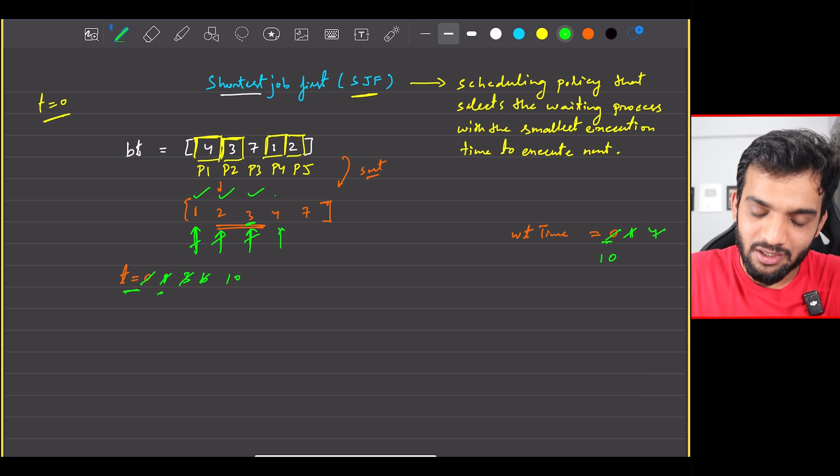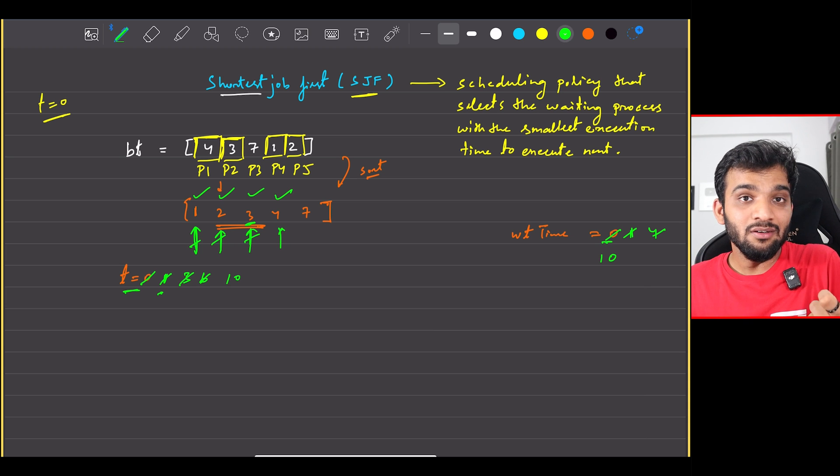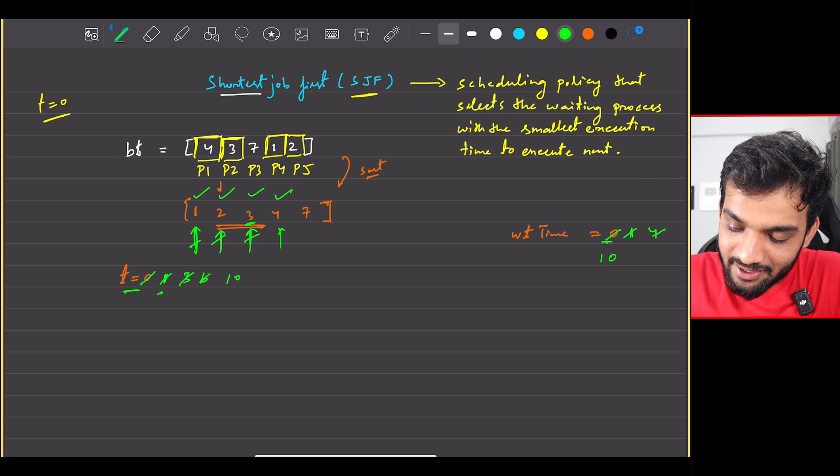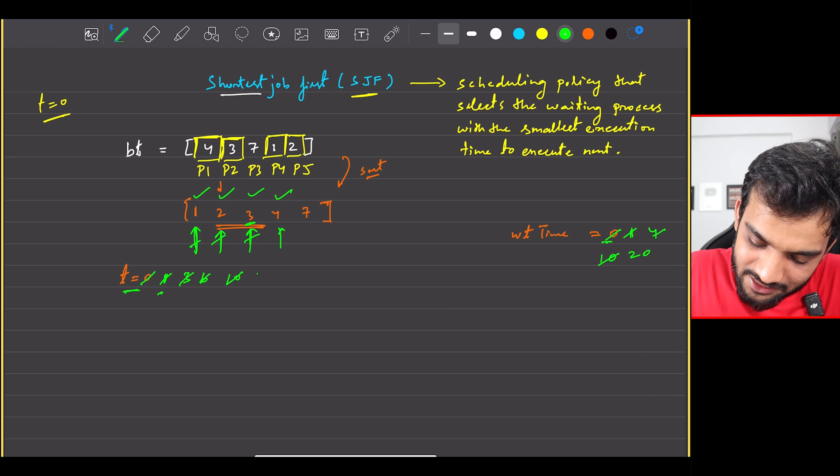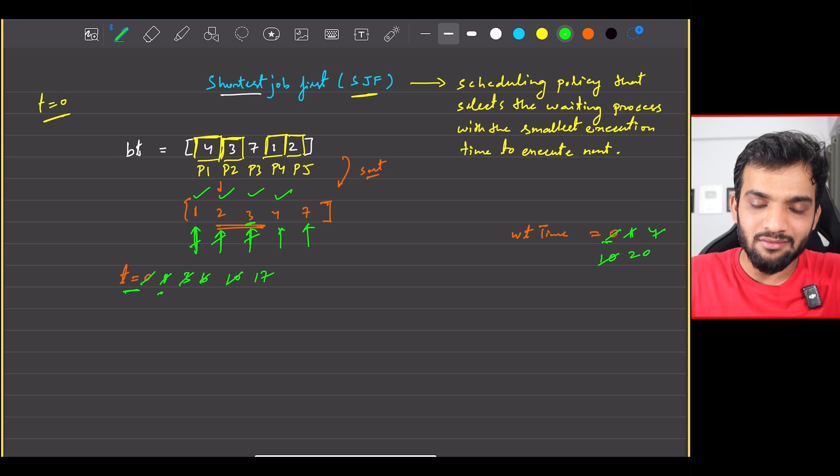I go to the next. When does it start? 6. So the waiting time will be 10. When does it end? It ends at 10 because I'll take another 4.